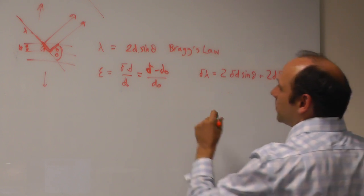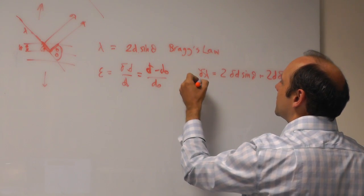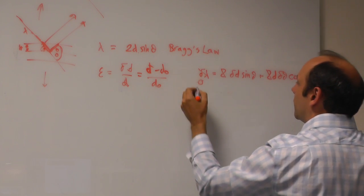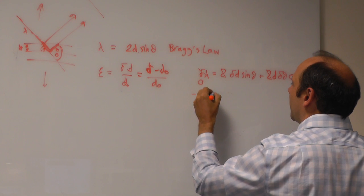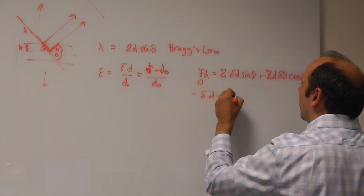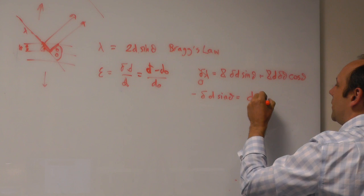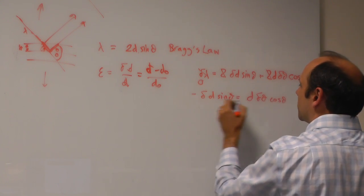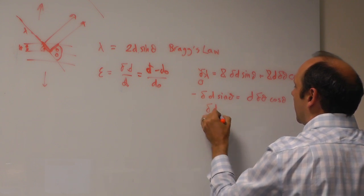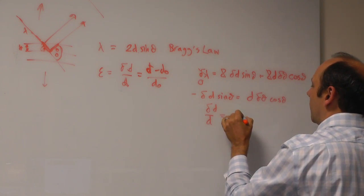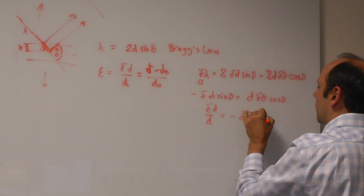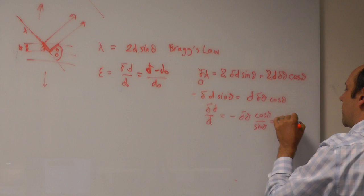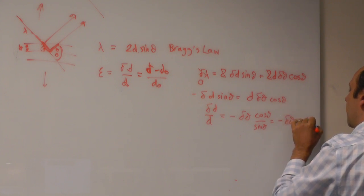Now, if I'm doing this with the same wavelength radiation all the time, that's equal to zero, so my twos will cancel. I can pull this over the other side, and I can say minus partial d sin theta is equal to d partial theta cos theta. I can bring the minus sign across and the d down, and I'll have partial d by d is equal to minus partial theta cos theta over sin theta, which is equal to minus partial theta cot theta, or 1 over tan theta.